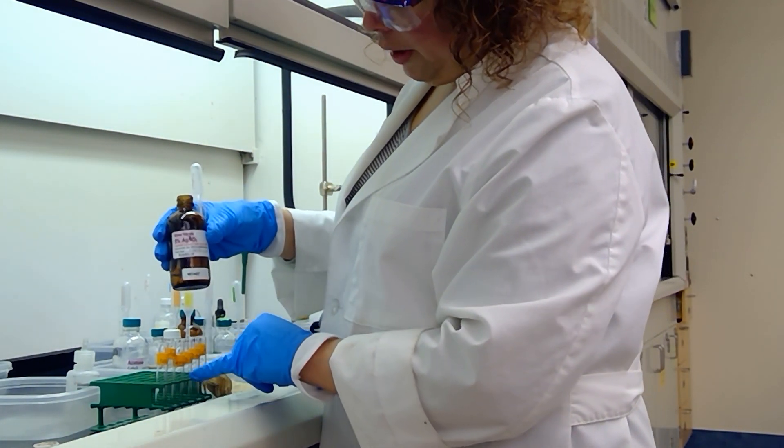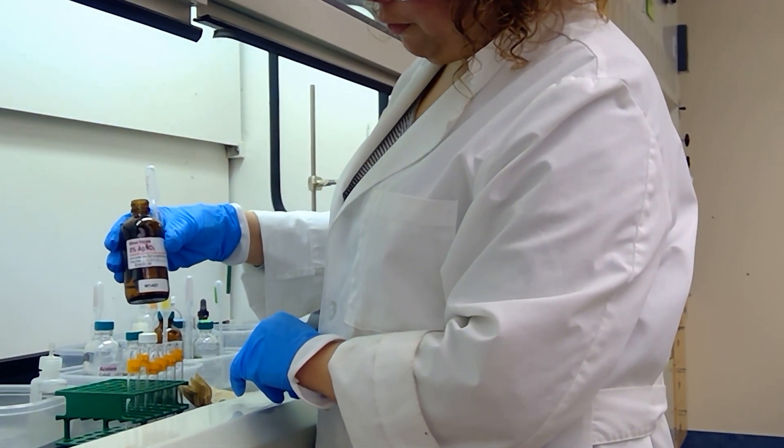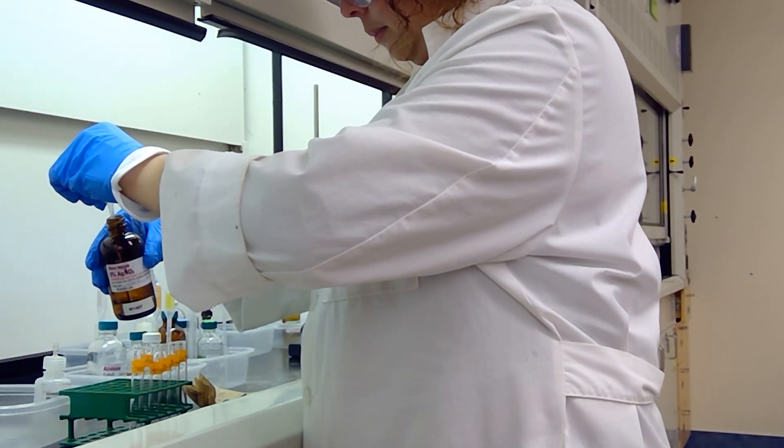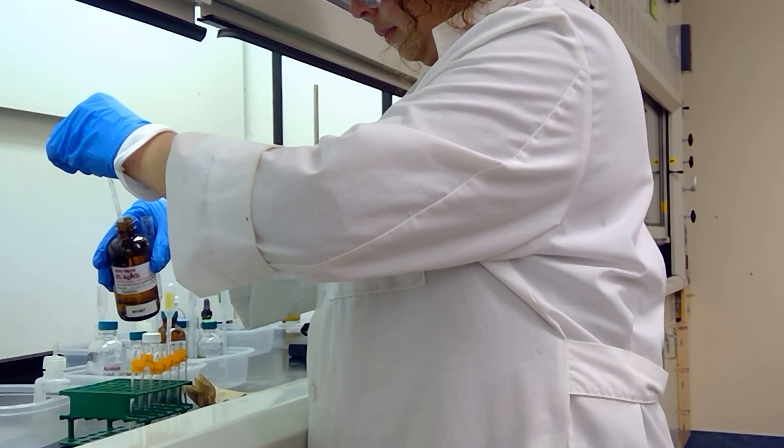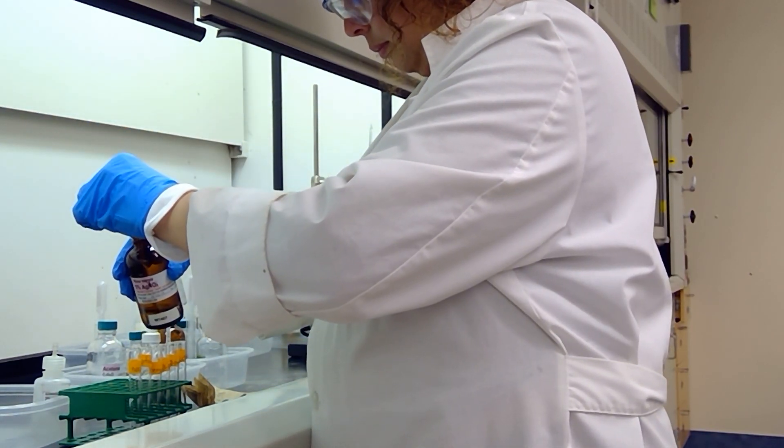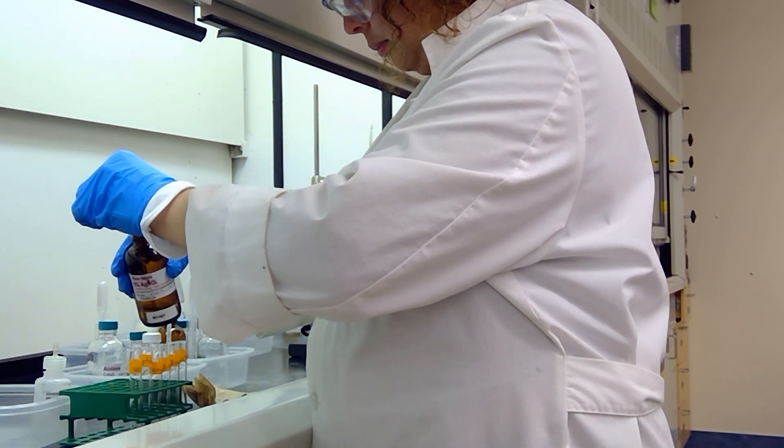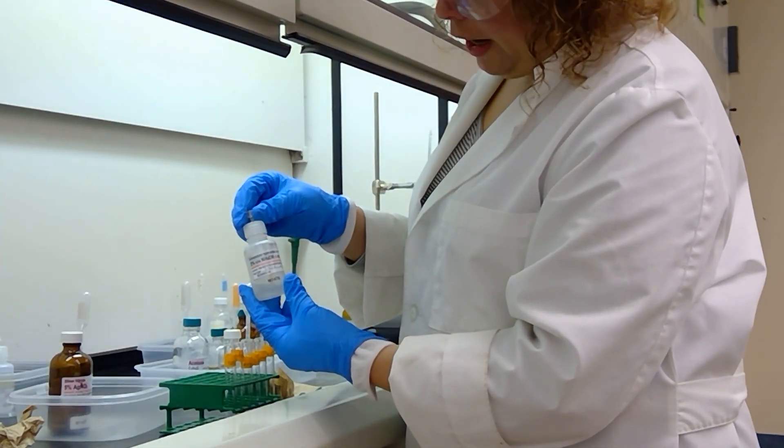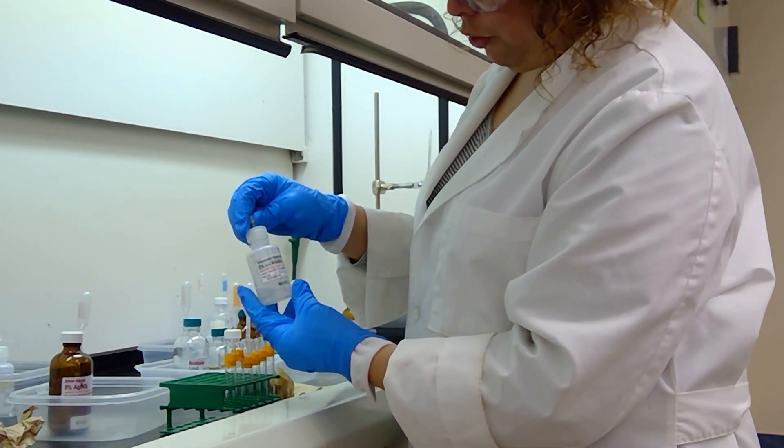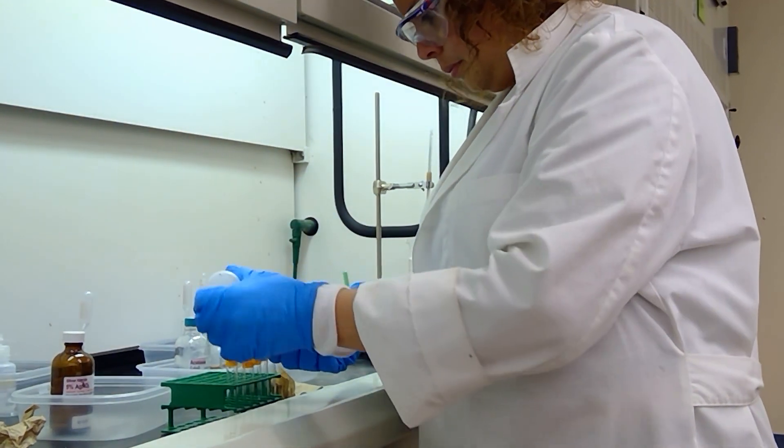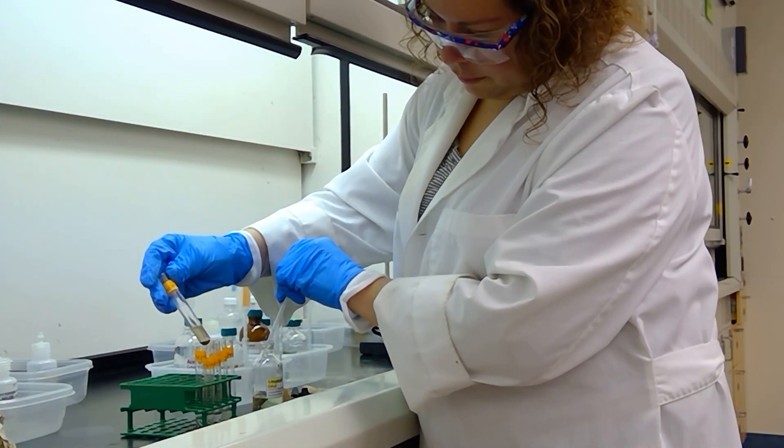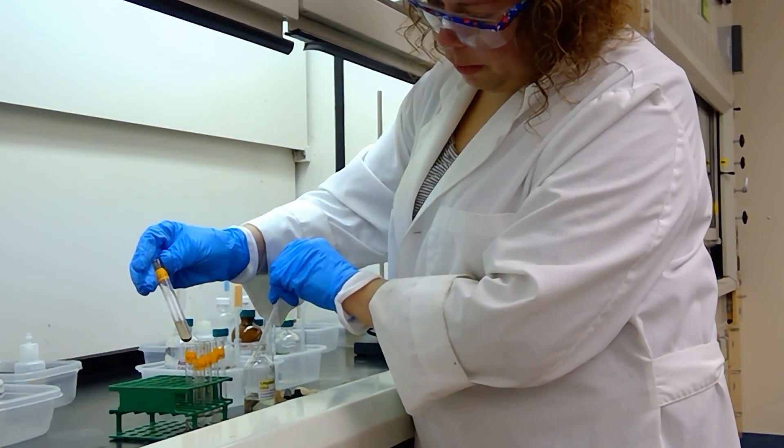We're starting off by adding 1 ml of silver nitrate solution to each of our test tubes. Next we're adding 2 drops of ammonium hydroxide solution to each of our test tubes. You can see the ammonia gas being formed over the top.